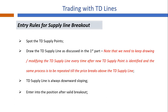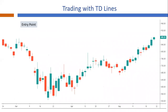Let's see on the chart. First, we identify the TD supply points and draw the TD supply line. Then we wait for price to break above it. Look at the marked candle — we can see that the price broke above and closed above the TD supply line. This is our breakout candle and now we can consider taking a long trade.